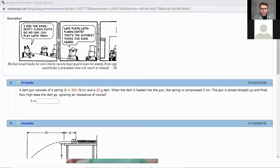A dart gun consists of a spring and a 0.25 gram dart. When the dart is loaded in the gun it's compressed eight centimeters and the gun is aimed straight up and fired. How high does the dart go ignoring air resistance? A lot of things to keep in mind - change that into kilograms so that would be 0.025 kilograms, make sure you change that into meters so that would be 0.08 meters.